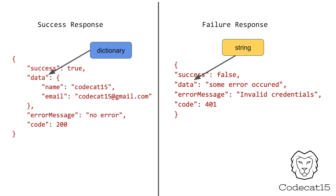In one case it is a dictionary and in the other case it is a string. Normally the failure case data key is a string, but for some reason the API team decided that the data key is going to be a string in the failure scenario.